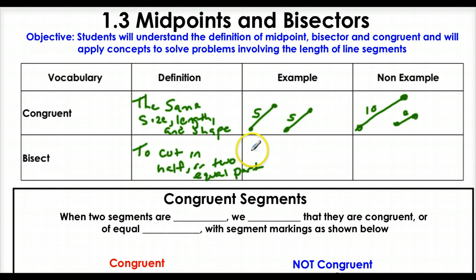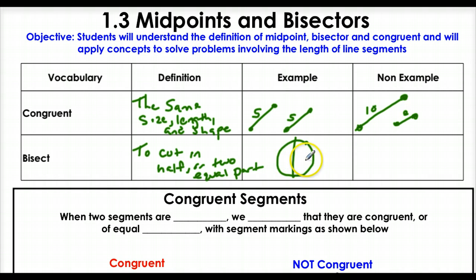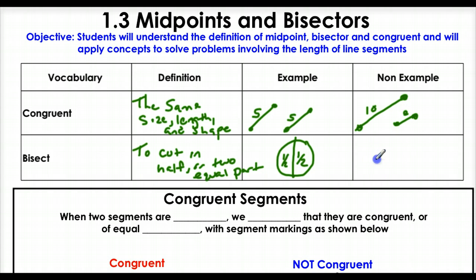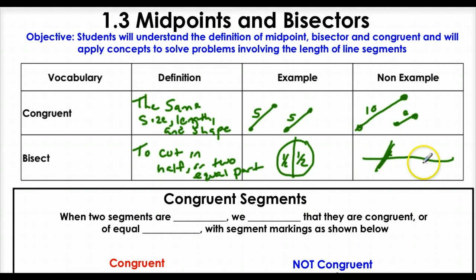An example of bisecting: if I had a cookie and I bisected it, that means I cut it into two equal parts — half over here and half the cookie over here. Something that wouldn't be bisected: if I had a piece of spaghetti and I cut it off to one side, that doesn't cut into two equal halves, so that is not bisected.